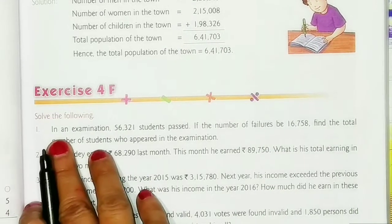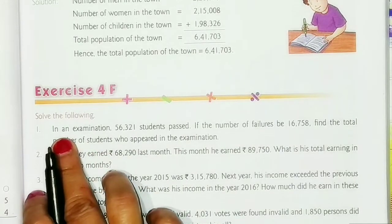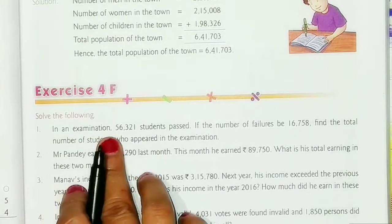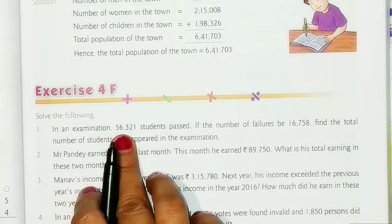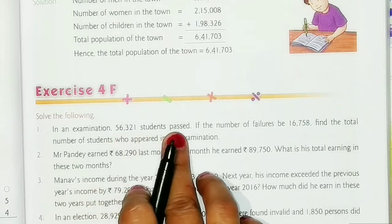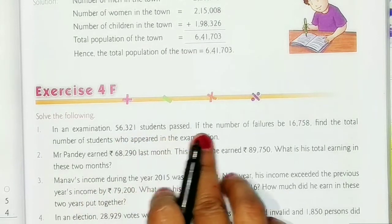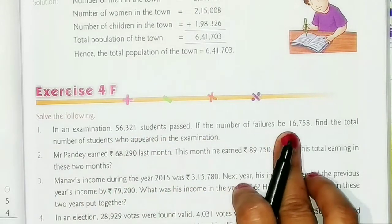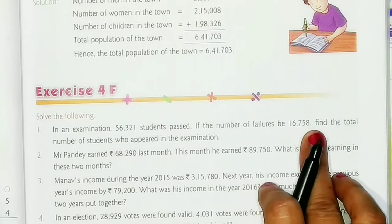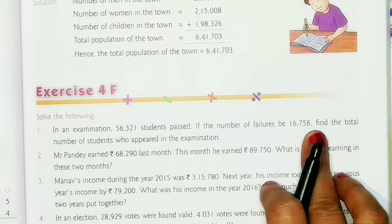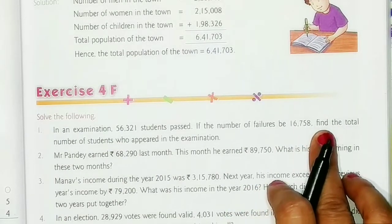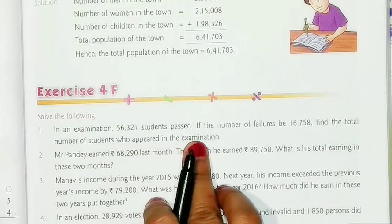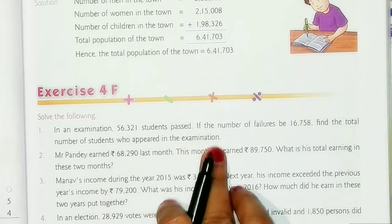Question number 1 says: in an examination, 56,321 students passed. If the number of failures is 16,758, then find the total number of students who appeared in the examination.